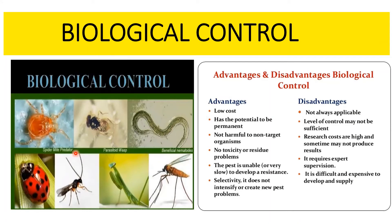Biological control is the management of pests through the use of their natural enemies — that is, the use of living organisms to control pests. A natural enemy such as a parasite or predator is introduced into the environment of pests and encouraged to multiply, becoming more effective in reducing the number of pests.